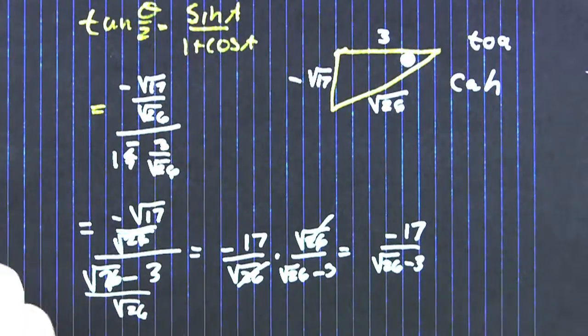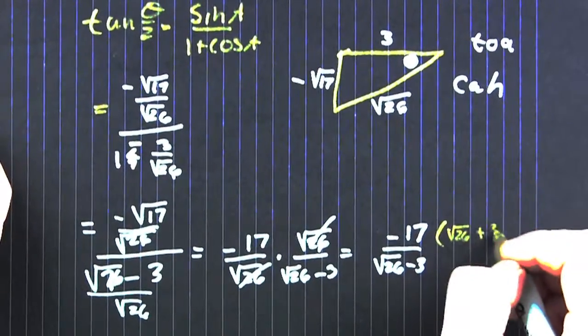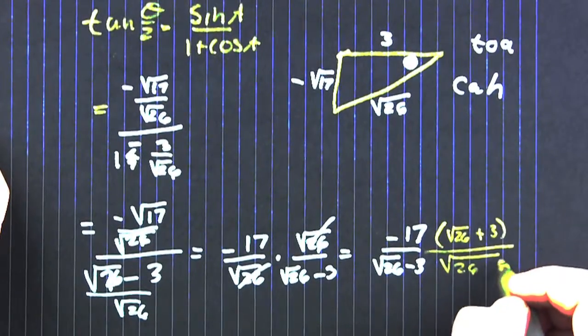Because, you know, like all books, we need to rationalize that denominator, multiply it by the conjugate. That's what we get. So then we get the square root of 26 plus 3 over the square root of 26 plus 3. Good.